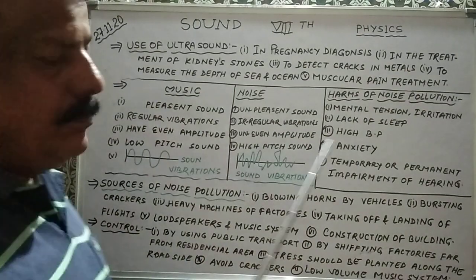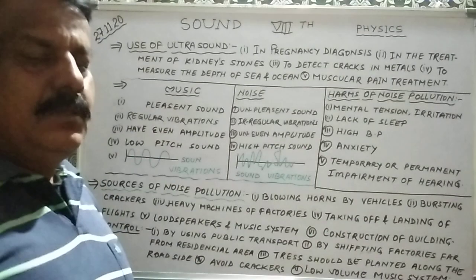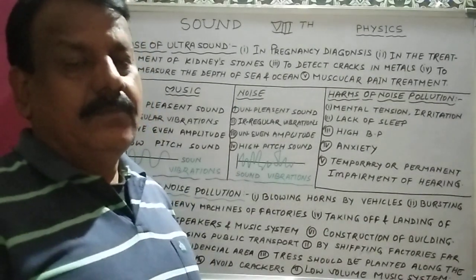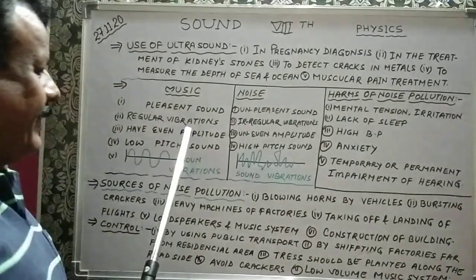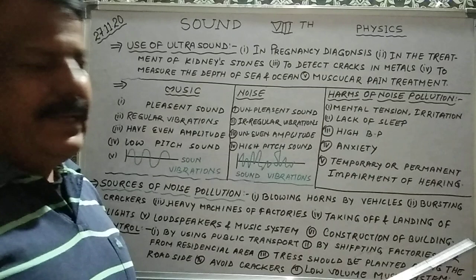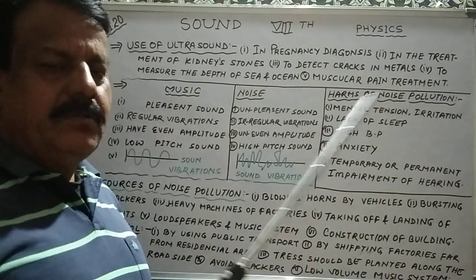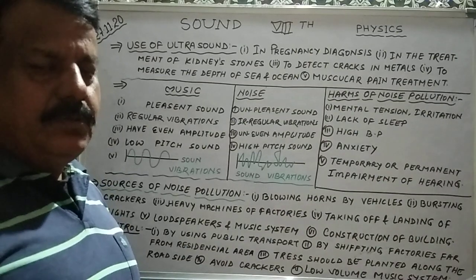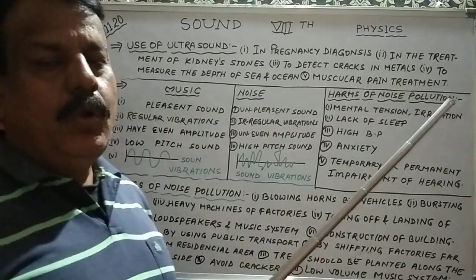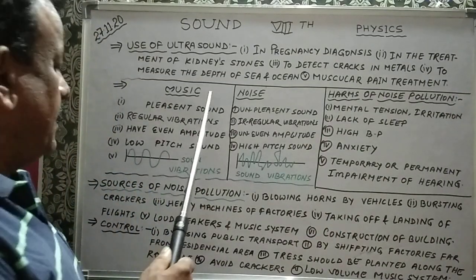Now let's come to music and noise. What is music? A pleasant sound that we like to hear is called music. Music has regular vibrations — if sound vibrations are regular, it is music. Music has even amplitude, and sound vibrations have low pitch. Low pitch sound is considered as music.